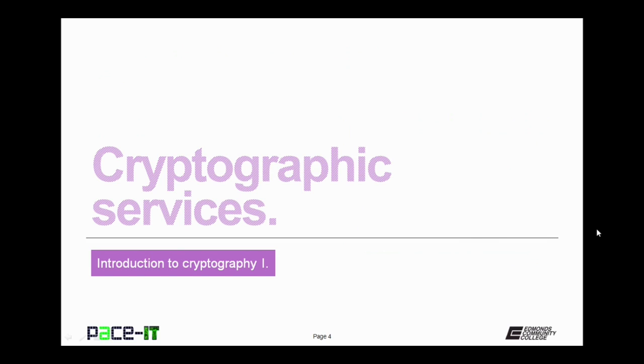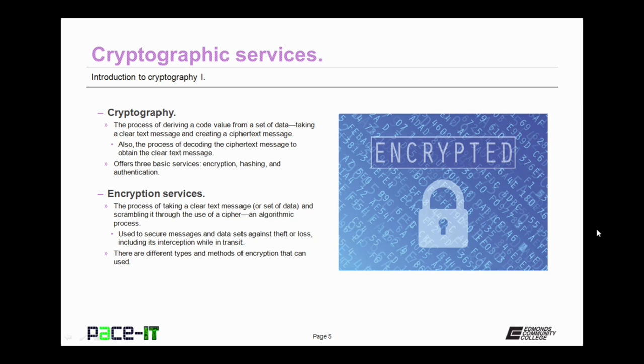Of course, I'm going to begin by discussing cryptographic services. Cryptography is the process of deriving a code value from a set of data. An example of this is taking a clear text message and creating a cipher text message, that is a message that can't be easily read. Cryptography is also the process of decoding the cipher text message to obtain the clear text message, so the reverse process is also part of cryptography.